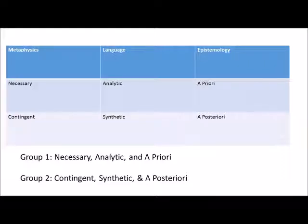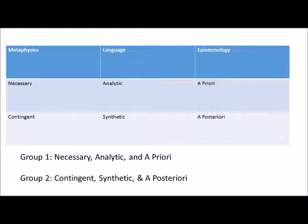You probably notice that a priori and analytic seem closely connected to necessary, while a posteriori and synthetic seem closely connected to contingent. Take a look at this chart. When we talk about necessary and contingent, we're talking about metaphysics. When we talk about a priori and a posteriori, we're talking about epistemology — whether we have to appeal to experience. And when we talk about analytic and synthetic, we're talking about language — whether the predicate is contained in the subject. You could group them: Group one — necessary, a priori, analytic; Group two — contingent, a posteriori, synthetic.